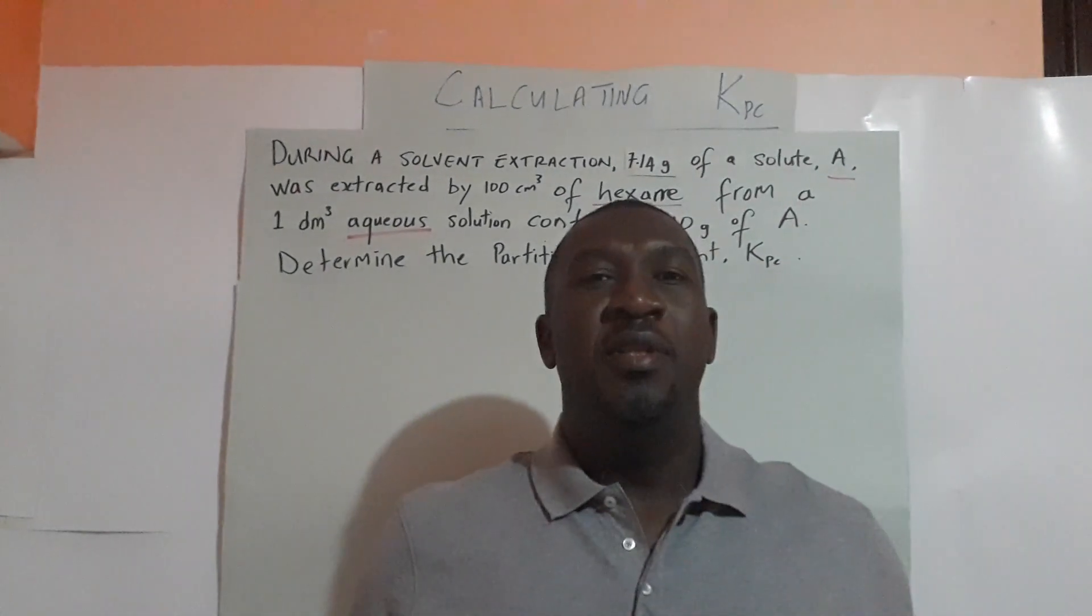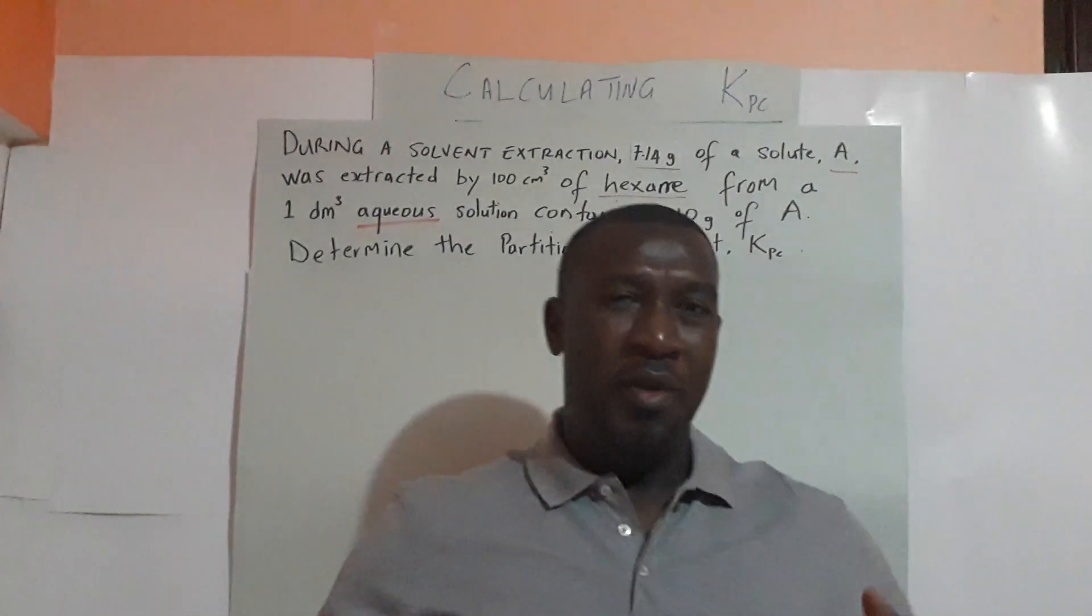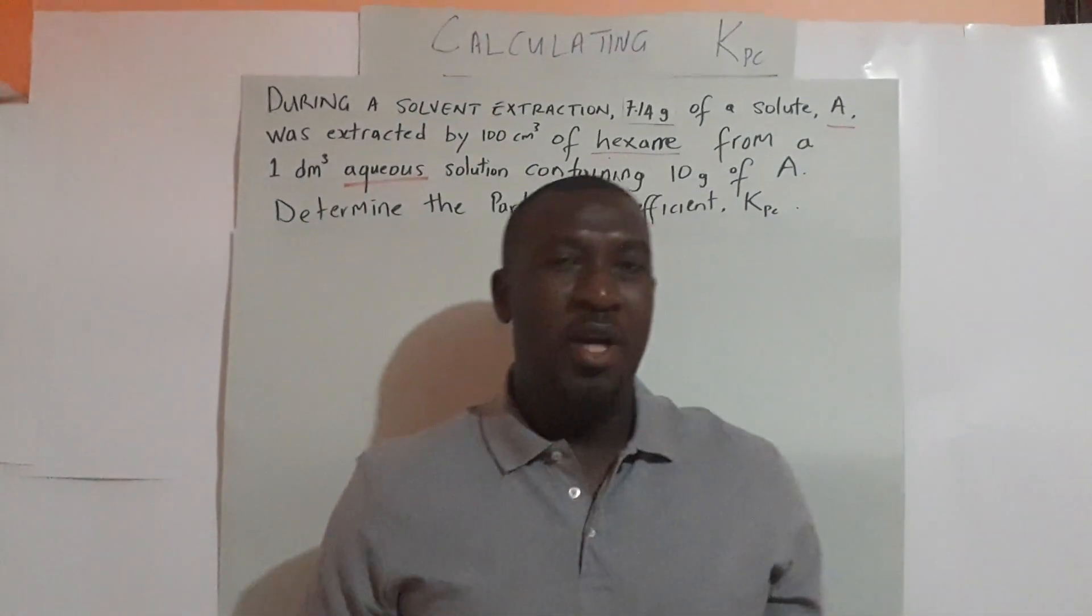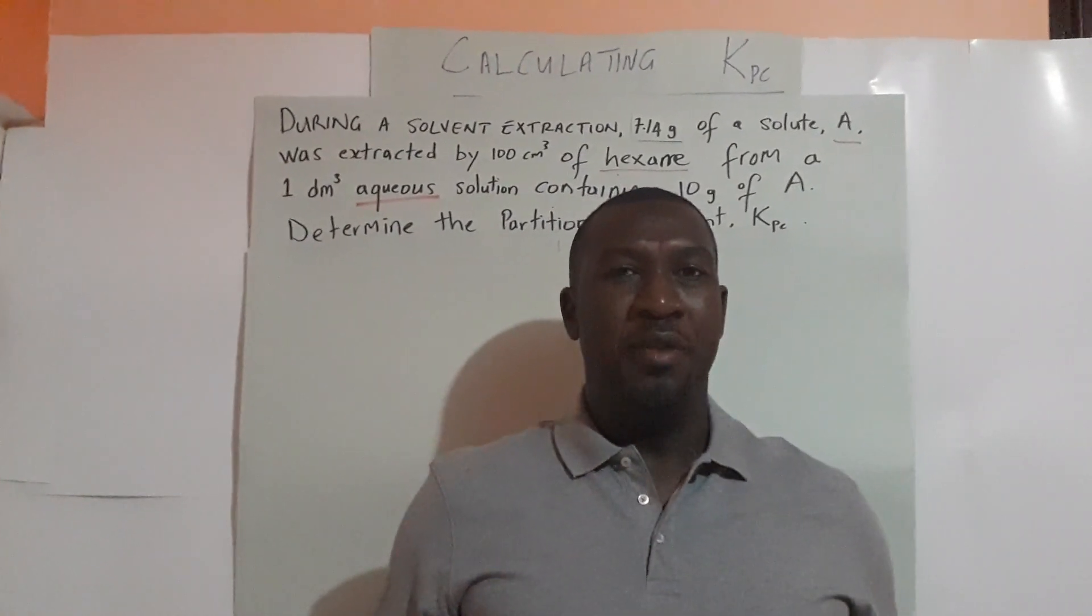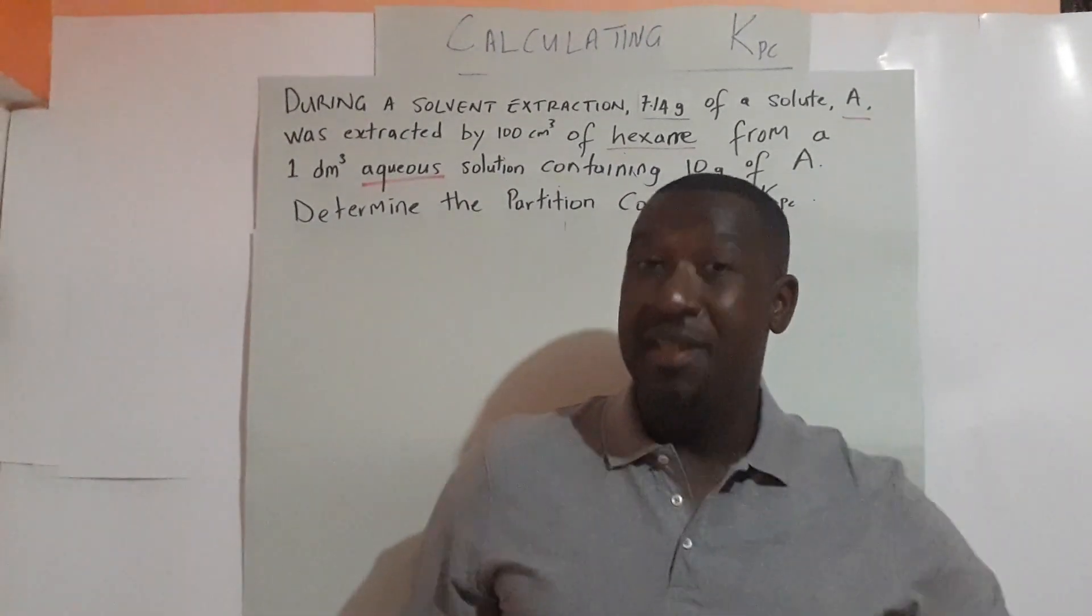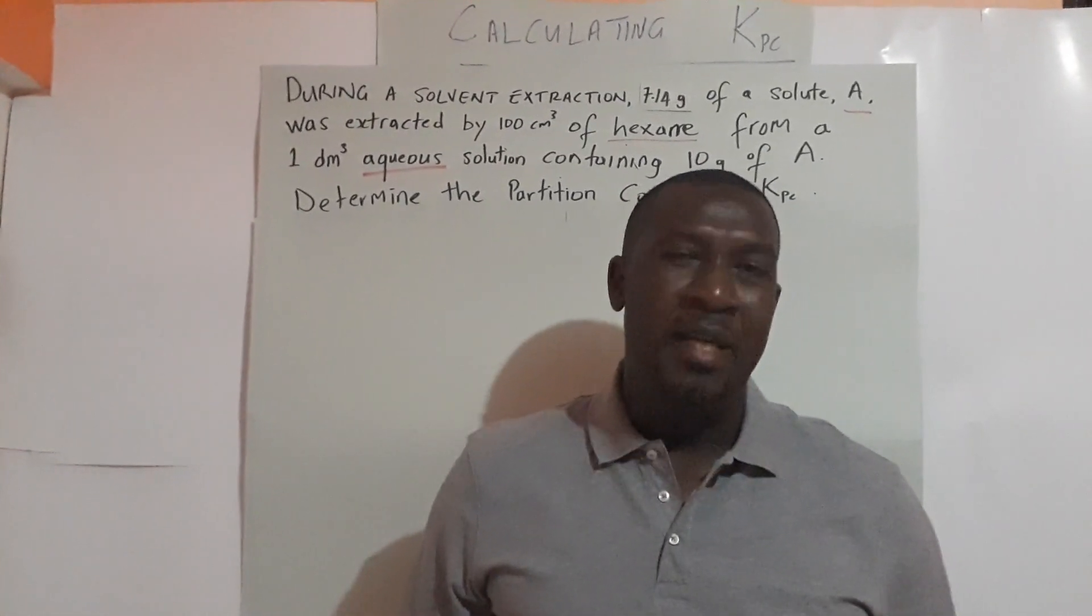The partition coefficient we are calculating is the ratio of the concentration of the solute in the two immiscible solvents at a given temperature and at equilibrium. Today we're going to look at how to calculate that.